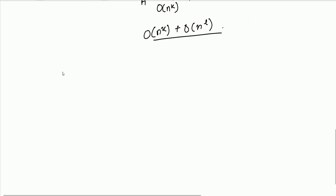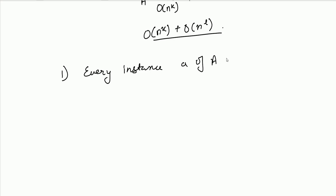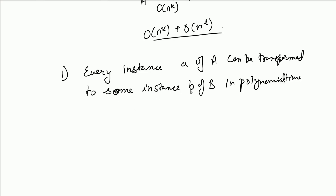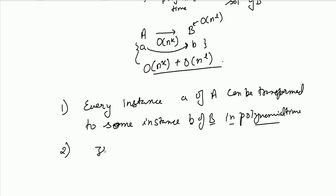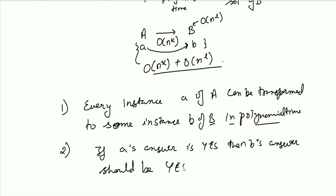There are two conditions for reduction. First, every instance of problem A can be transformed to some instance of problem B in polynomial time. Second, if A's answer is yes, then B's answer should be yes. And if A's answer is no, then B's answer should also be no.